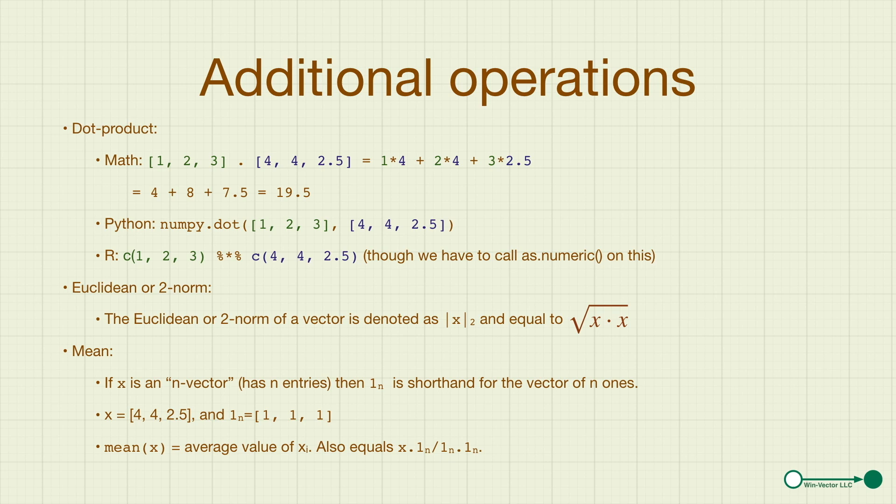Another operation we can take with vectors is the mean, and it has a very simple definition as just add up all the cells and divide by how many cells there are. And just to relate this back to earlier ideas, that is equivalent to dotting our vector against a vector of all ones and dividing by the count of the cells.